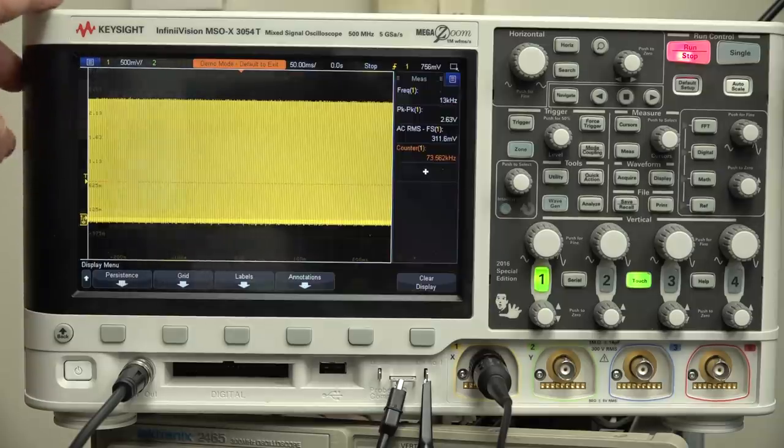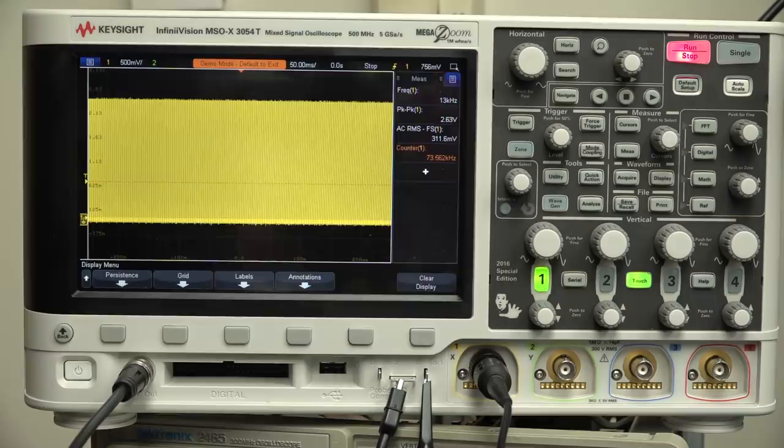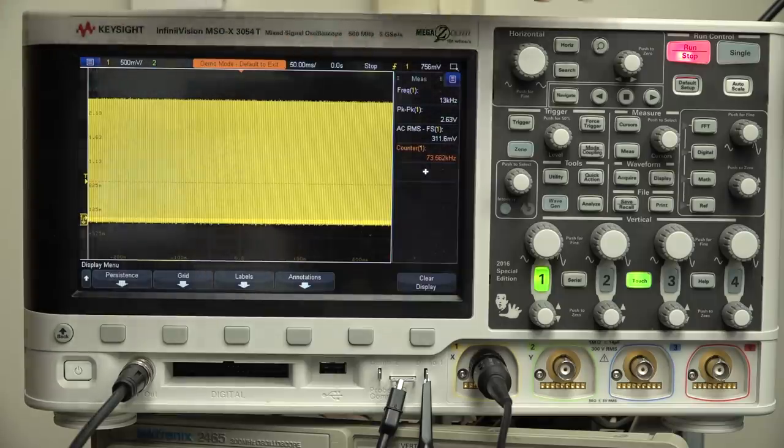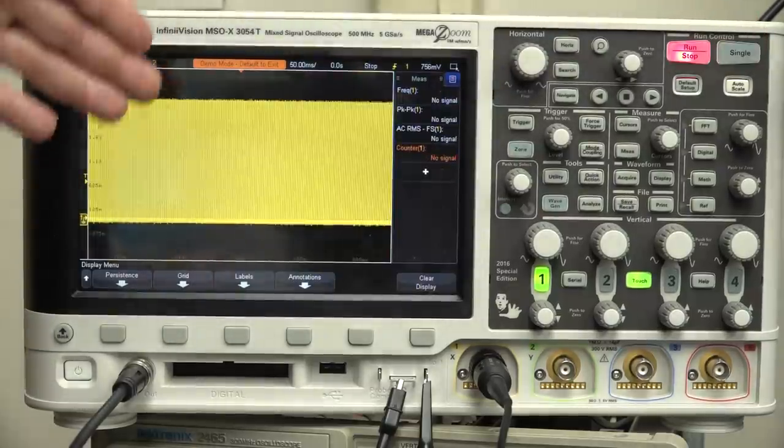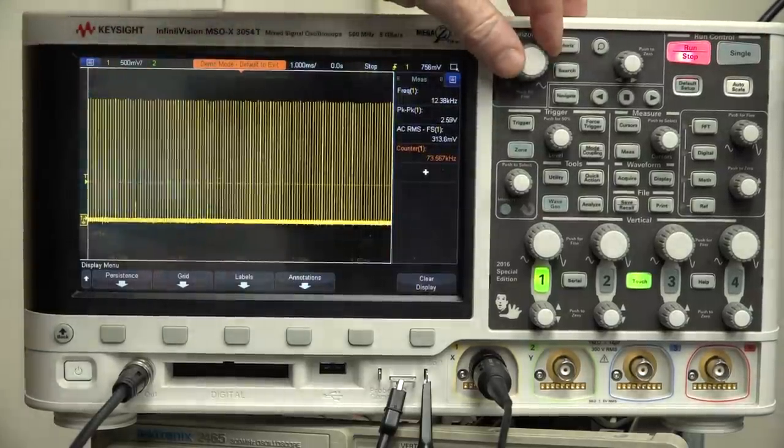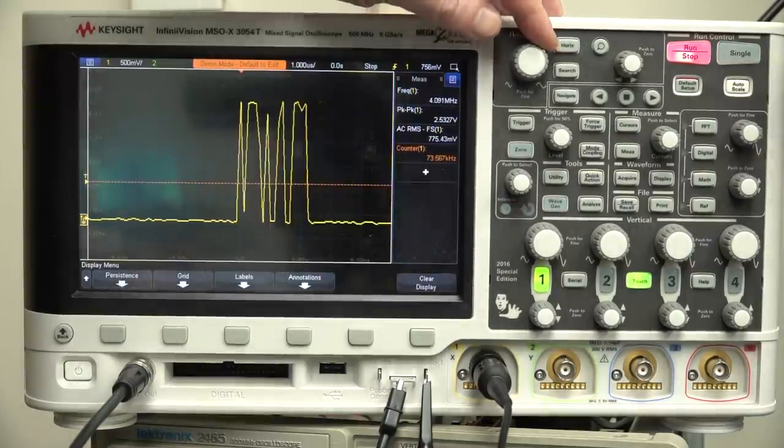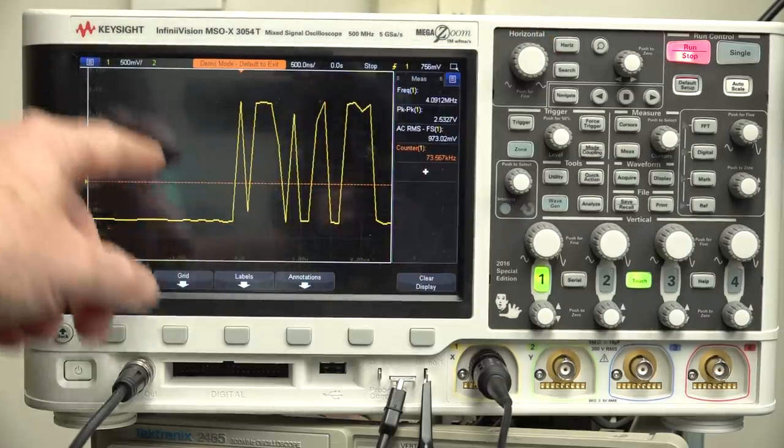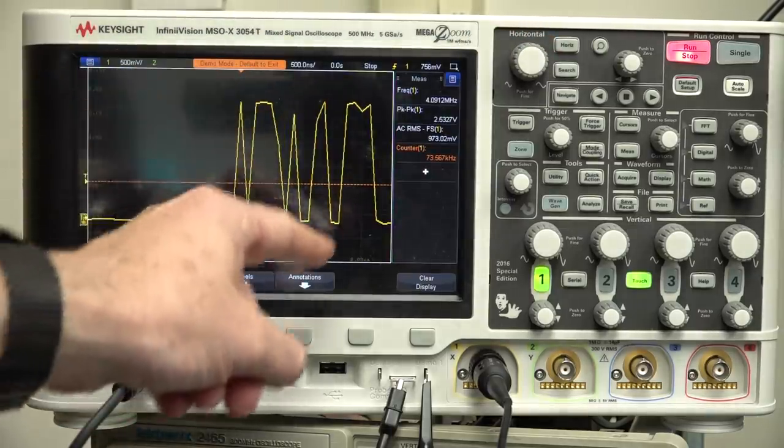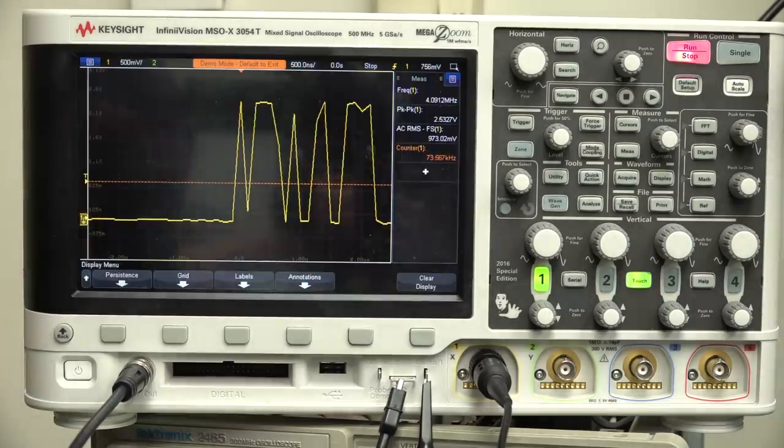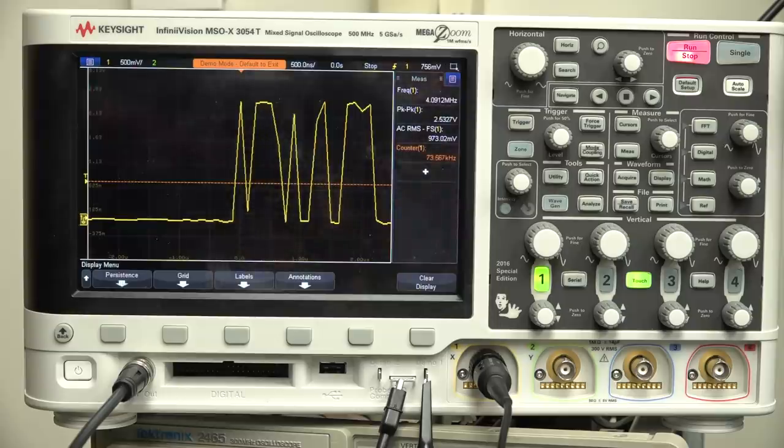Which is why some scopes, like this Keysight 3000 here, are smart enough to know this is a problem and actually disables it for you by default. It's smart enough to know that. In fact, with this, with the Keysight InfiniVision scopes, you cannot enable or disable the sinx-on-x interpolation. It takes care of it for you. So let's single shot capture that at the same 50 milliseconds. This only has 4 meg of memory maximum. But you'll notice that there is no sinx-on-x interpolation. It's using linear interpolation, which is what you get if you turn off your sinx-on-x.